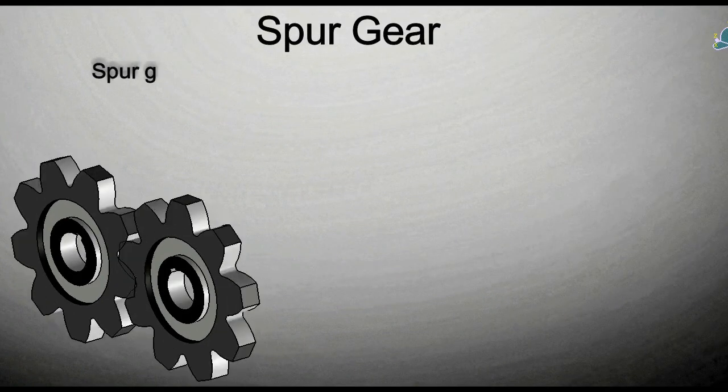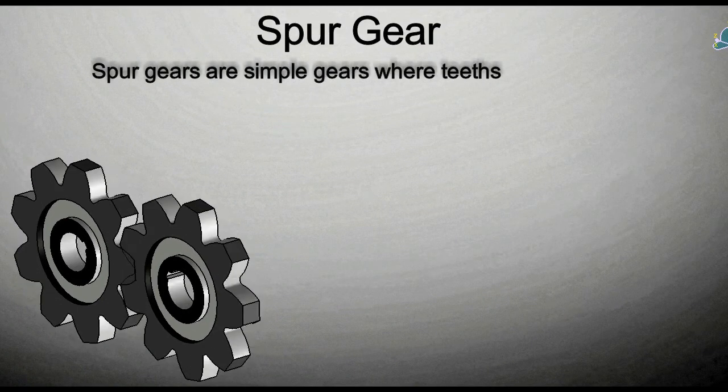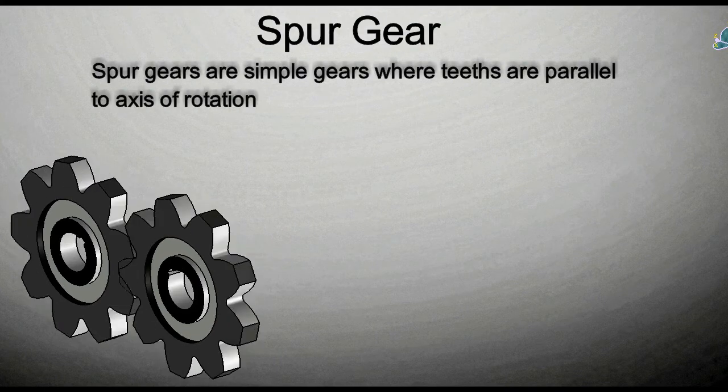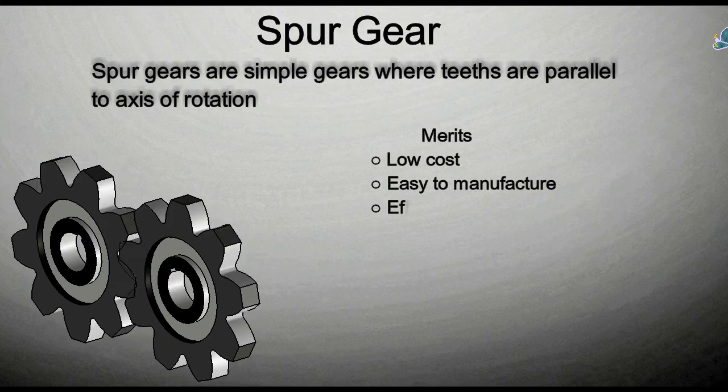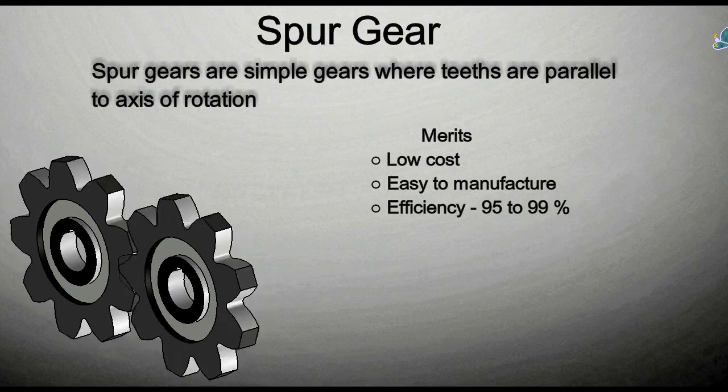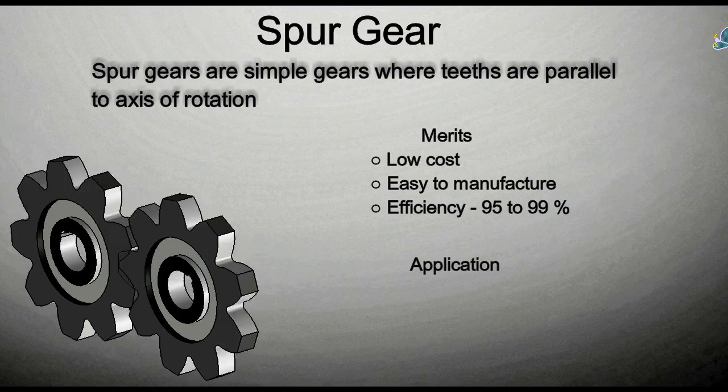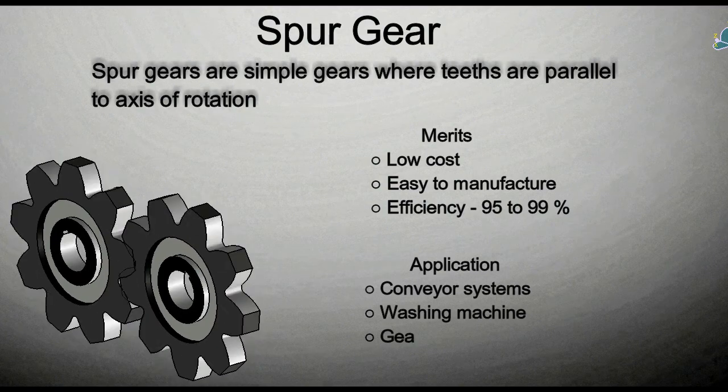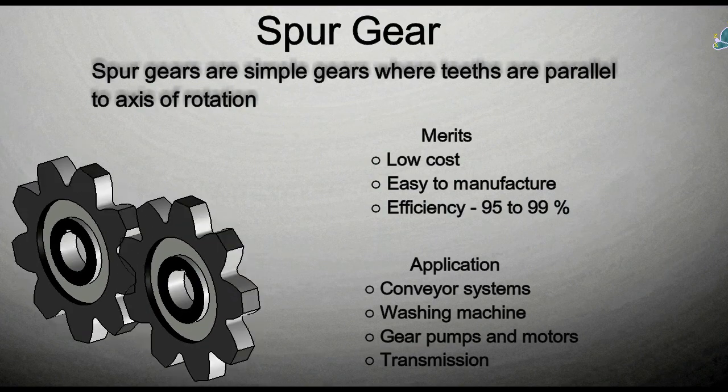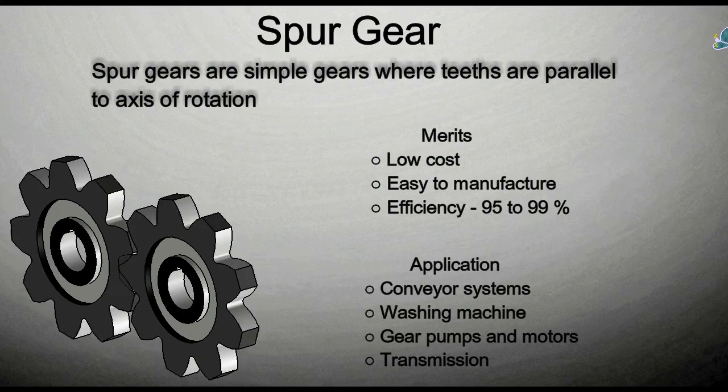Spur gear. Spur gears are simple gears where teeth are parallel to the axis of rotation. Merits of spur gears are low cost and easy to manufacture. Power transmission efficiency ranges between 95% to 99%. Spur gears are used in conveyor systems, washing machines, gear pumps and motors, transmissions and in few more.